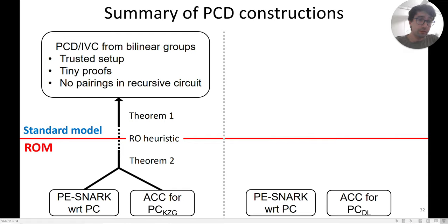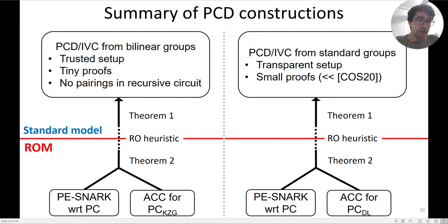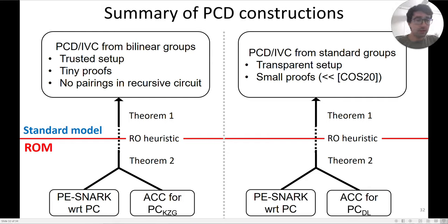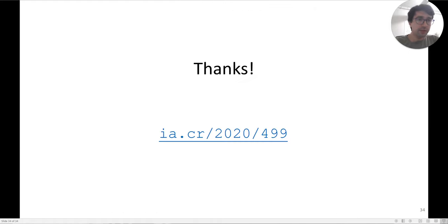The alternative construction: again you start with some predicate-efficient SNARK and add an accumulation scheme for a different polynomial commitment — a discrete-log-based scheme based on the Bulletproofs inner product argument. Applying these theorems, you get PCD and IVC from standard groups — not necessarily with pairings — with a transparent setup, meaning no secret parameter is generated. The proofs are pretty small: not as small as the KZG proofs, but much smaller than previous PCD and IVC schemes with transparent setup. And that is all — thank you.